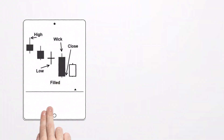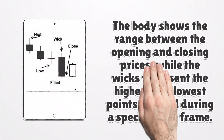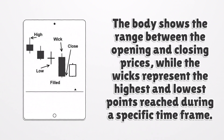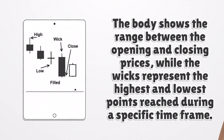Each candlestick has four main components: open, high, low, and close. The body of the candlestick shows the range between the opening and closing prices, while the wicks represent the highest and lowest points reached during a specific time frame.